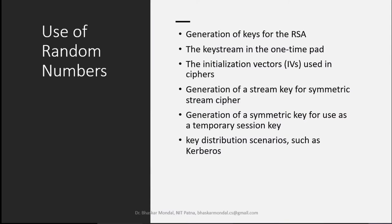The uses of random numbers in cryptography include: generation of keys for RSA. Later we will study asymmetric encryption and the RSA algorithm, where we need two prime numbers chosen randomly. For the key stream in a one-time pad — like different stream ciphers we will study — you need a one-time pad which must be randomly generated, and that can be produced using a random number generator. Also, initialization vectors used in different ciphers need to be generated randomly, so we will need random numbers there.